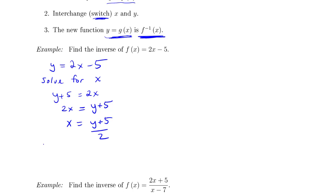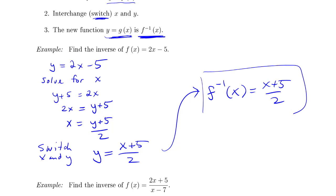And then I'm going to divide by 2 so that I get x is y plus 5 over 2. Now I'm literally going to switch x and y giving me y equals x plus 5 over 2. This then becomes f inverse.